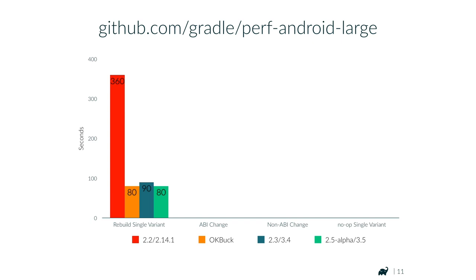When we change a single line of code that changes the API, with Android Plugin 2.2 this takes 210 seconds. With Buck, this takes 26 seconds. With Gradle Android Plugin 2.3, we are at 37 seconds. And with 2.5 alpha, we have 25 seconds.